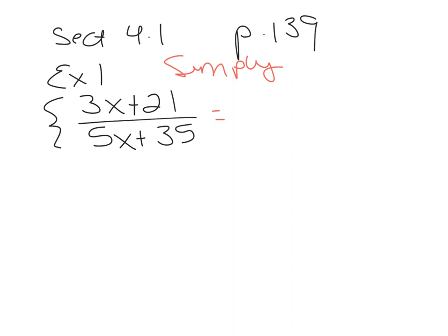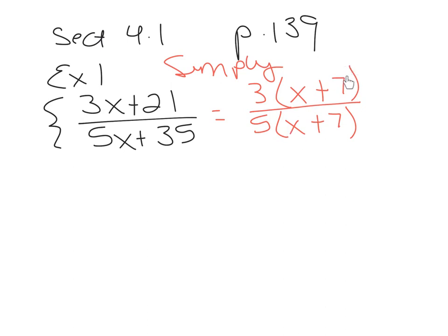In the numerator, the first kind of factoring we see is a GCF. So we're going to factor out the GCF of 3, which leaves x plus 7. In the denominator, there's a GCF of 5; when we factor that out, that also leaves x plus 7. We notice these binomials match. Since this operation is multiplication, these are factors and now you can reduce them. You can only reduce binomials if they exactly match a binomial above or below. You can't reduce pieces or terms of binomials, but you can reduce entire matching binomials. So that leaves a final reduced answer of 3 over 5.